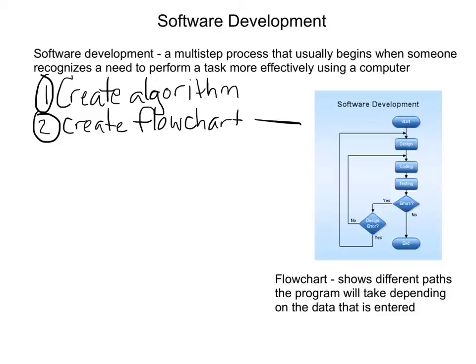A flowchart looks just like this right over here. It shows different paths that the program will take — a series of directions and decisions. In this example, they design, do all their coding, write everything out, then test it. If there's an error, a diamond shape represents the error question: if there are errors you go one way, if there are no errors you go another way. Creating your flowchart tells you, when you come to a decision, what you're going to do.